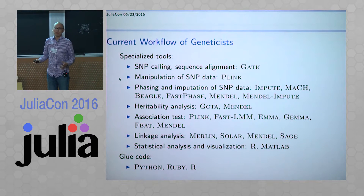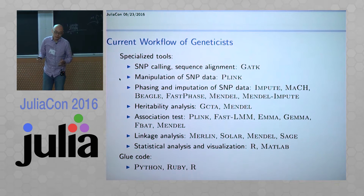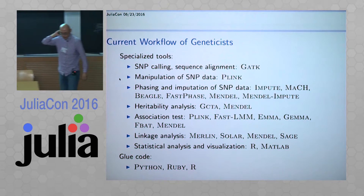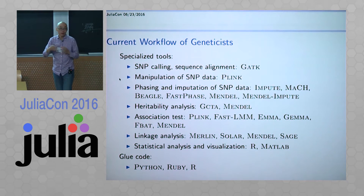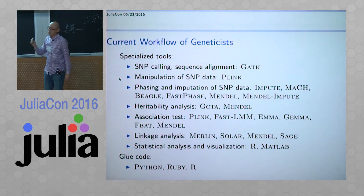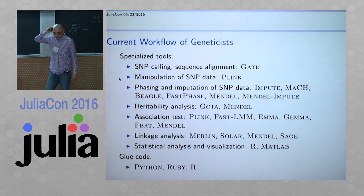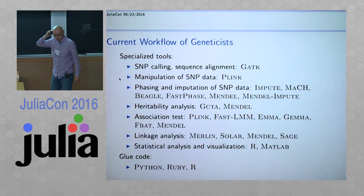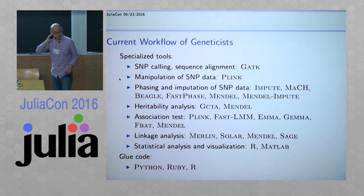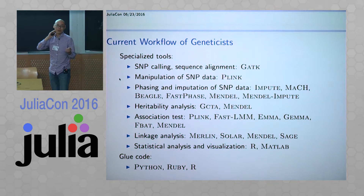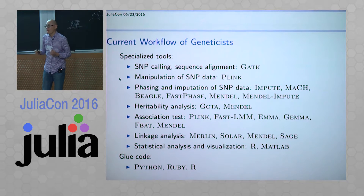But as a method developer - say you are a statistical geneticist who wants to develop some new method, like Kevin was going to propose a new statistical method for doing GWAS - it's very painful. Even if you just want to do a minor tweak of one step in the analysis, most of this software was written in C, C++, or Fortran. Mendel software is in Fortran. Digging into those code bases to make minor tweaks is almost impossible for PhD students within a reasonable time span.